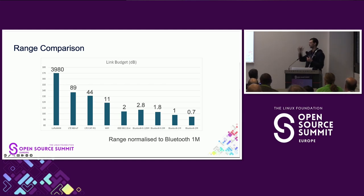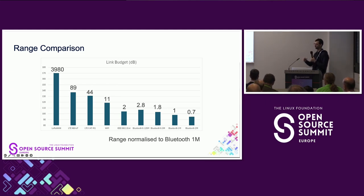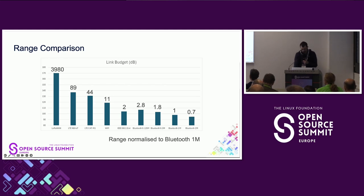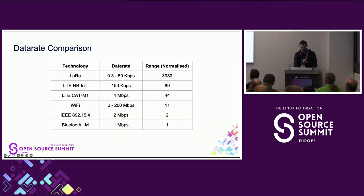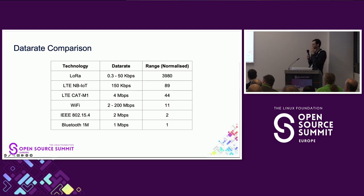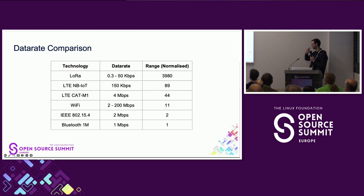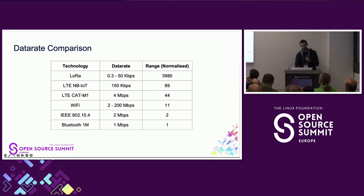Bluetooth and IEEE 802.15.4 sit at the lower end of range; Wi-Fi is a bit longer; cellular technologies sit between Wi-Fi and LoRa. In terms of data rates, it's not surprising that as range increases, data rates tend to go down — that general trend holds. The 200 Mbps figure for Wi-Fi is aspirational for newer Wi-Fi standards, less so for LPWAN. But the overall takeaway is: range goes up, data rate goes down.